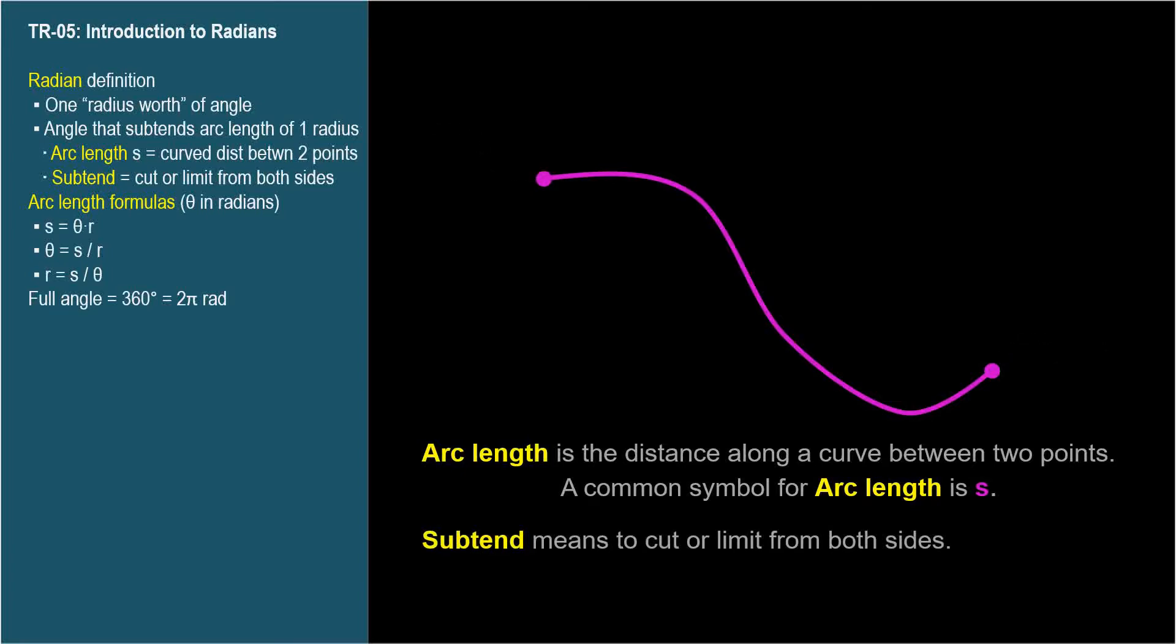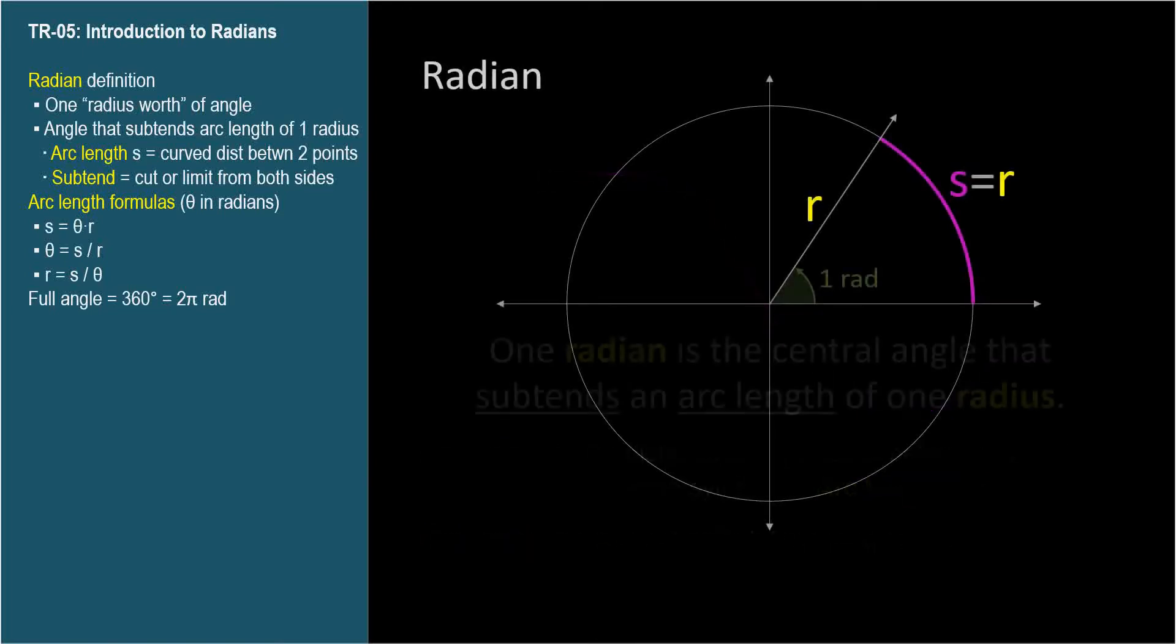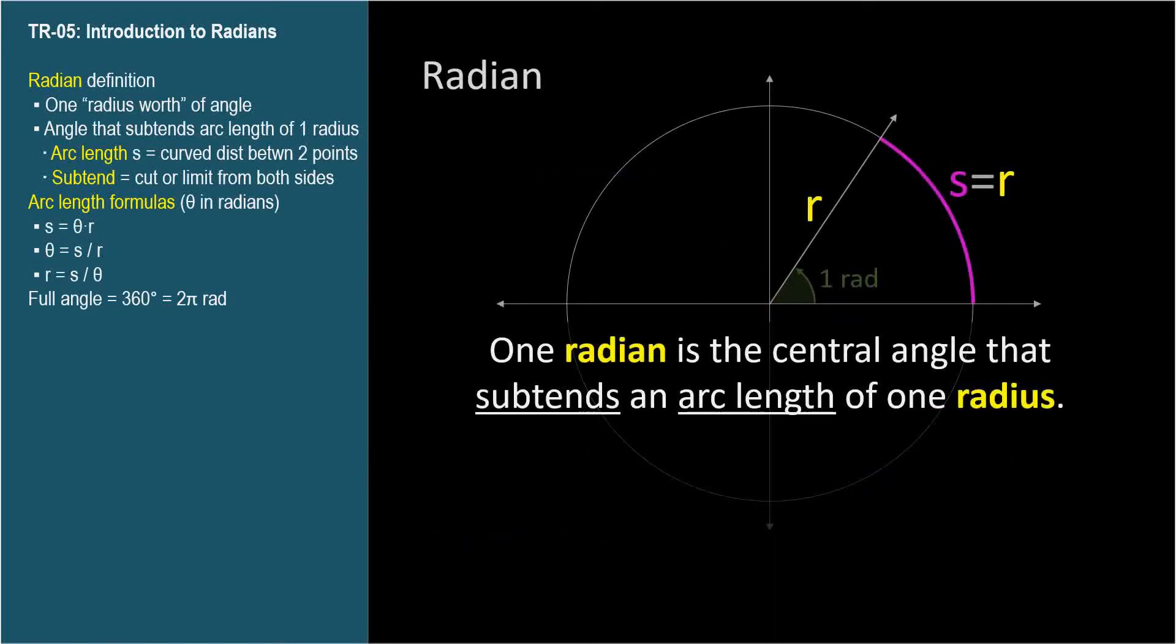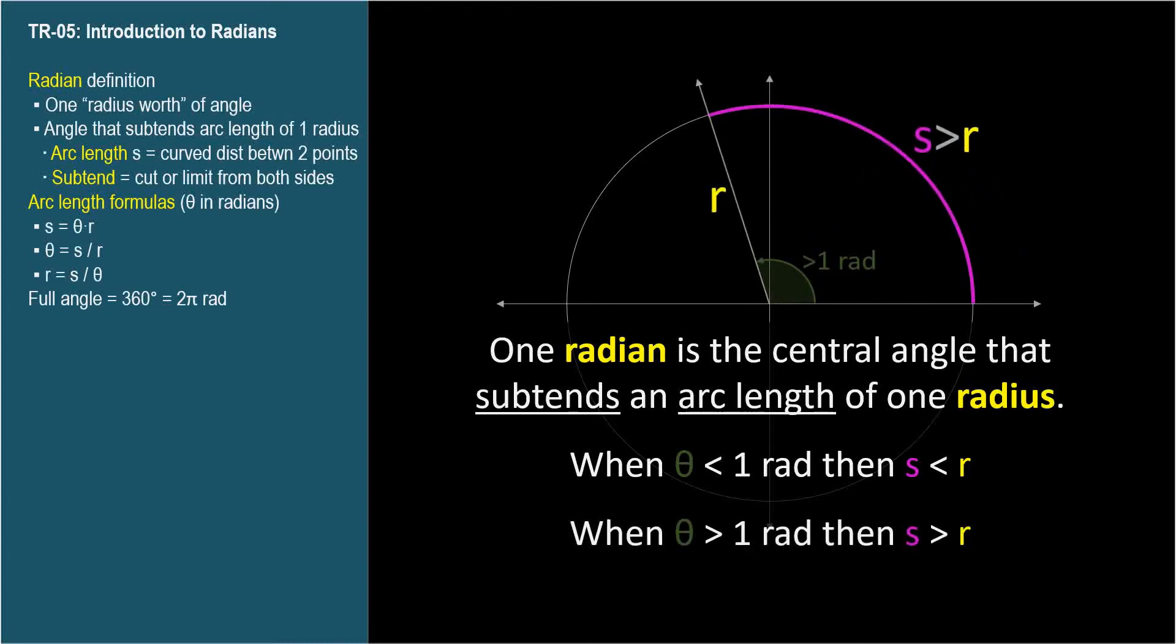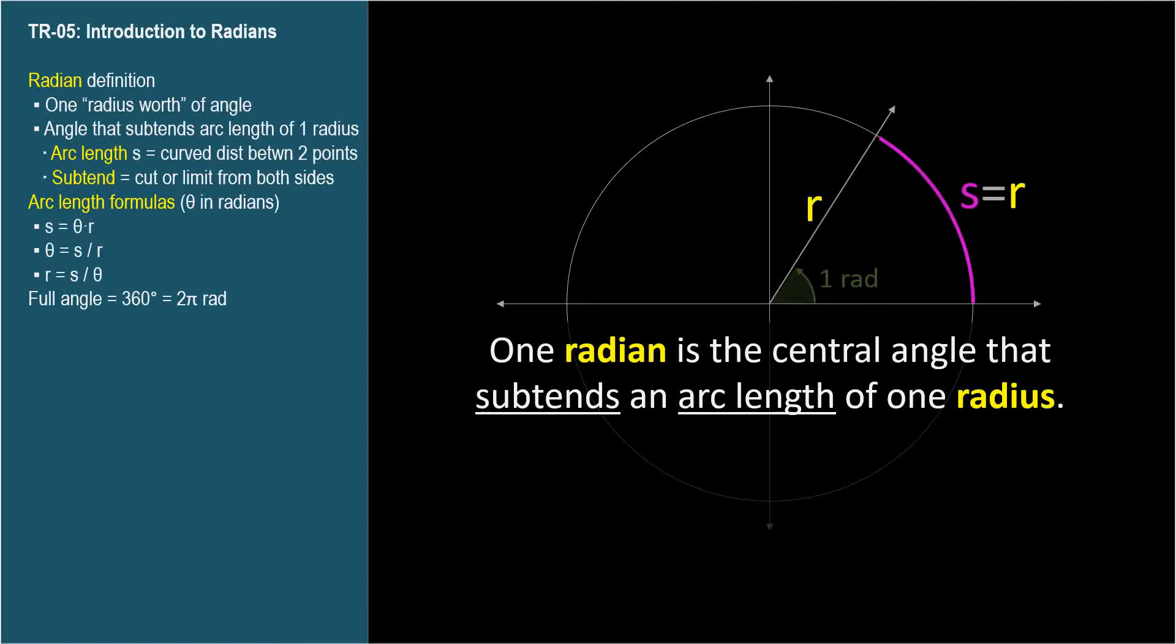So the official definition of radian is the size of an angle that subtends an arc length of one radius. The abbreviation for radian is rad. We'll talk about its units in just a moment. An angle smaller than one radian will subtend an arc length less than one radius. An angle greater than one radian will subtend an arc length greater than one radius. When the angle is exactly one radian, the arc length is exactly one radius.